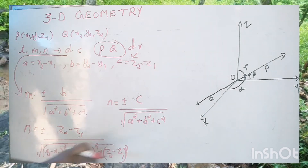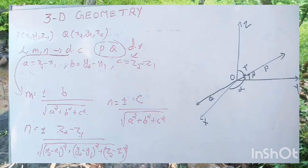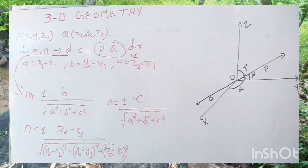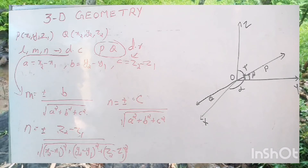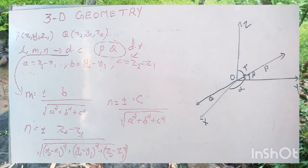The denominator is actually the distance between the two points P and Q. That is our distance formula in three-dimensional geometry.